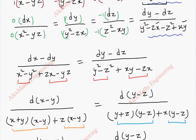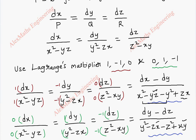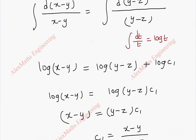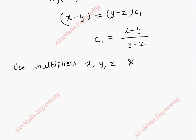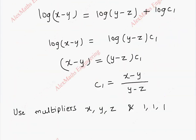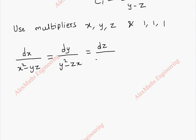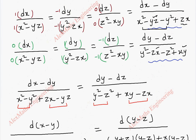Now we have to choose another set of multipliers and proceed in a similar way. We will use multiplier (x, y, z) to multiply with each respective term, and another multiplier (1, 1, 1). Let's copy the original expression: dx by (x² minus yz) equal to dy by (y² minus zx) equal to dz by (z² minus xy).